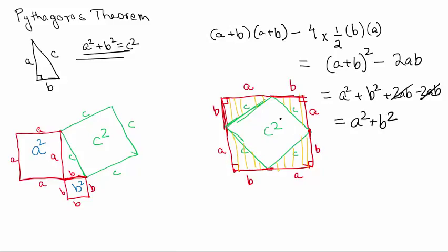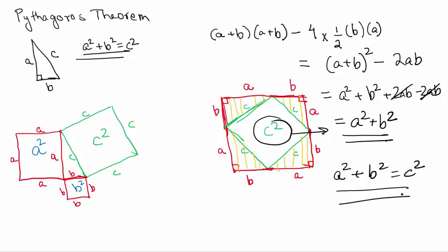So the area we were representing as C squared is equal to A squared plus B squared. We can now comfortably say that A squared plus B squared is equal to C squared. This is one of the visual ways to prove that the Pythagorean theorem is correct — that for a right triangle with legs A and B and hypotenuse C opposite the 90 degree angle, A squared plus B squared equals C squared. I hope this helped you understand the theorem visually. Thank you!